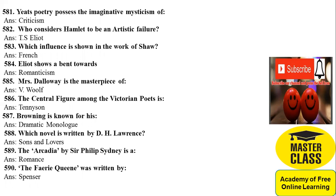584: Eliot shows a bent towards Romanticism — he was in a way inspired by the Romantic poets. 585: Mrs Dalloway is the masterpiece of Virginia Woolf. 586: The central figure among the Victorian poets is Tennyson. 587: Browning is known for his dramatic monologues. 588: Which novel is written by D.H. Lawrence? Sons and Lovers. 589: The Arcadia by Philip Sidney is a romance. 590: The Faerie Queene was written by Edmund Spenser.